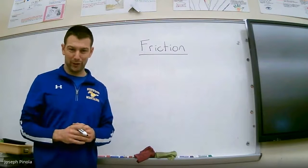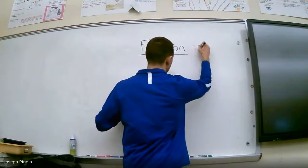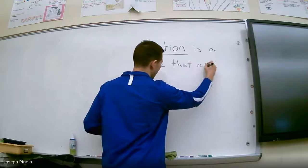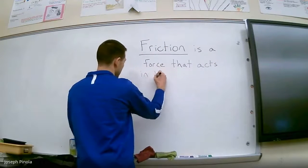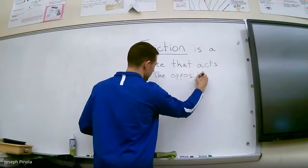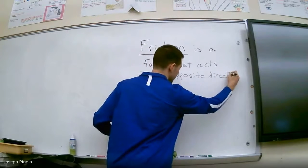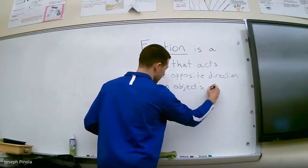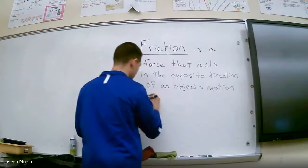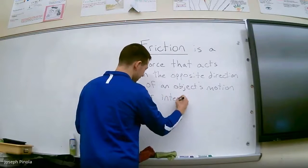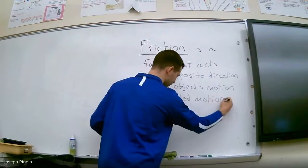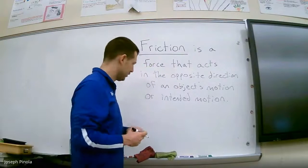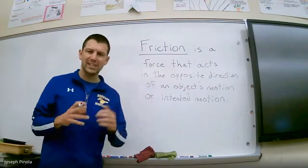Let's start by defining what friction is. Friction is a force that acts in the opposite direction of an object's motion or intended motion.